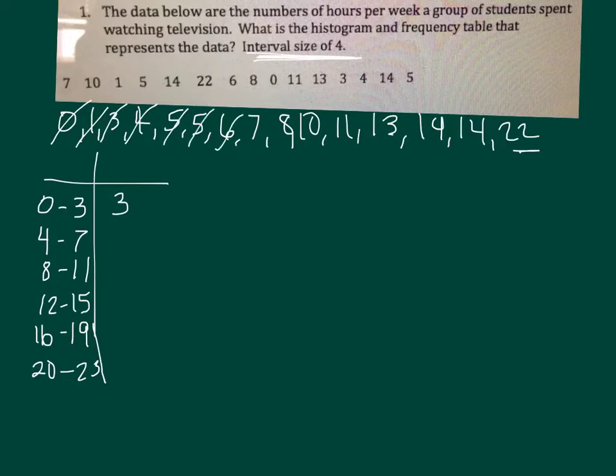And then 4 to 7, so 1, 2, 3, 4, 5. And then 8 to 11: 1, 2, 3. 12 to 15 is 1, 2, 3. There are no numbers between 16 and 19. And then there's 1 between 20 and 23. Frequency means how many times does it show up.